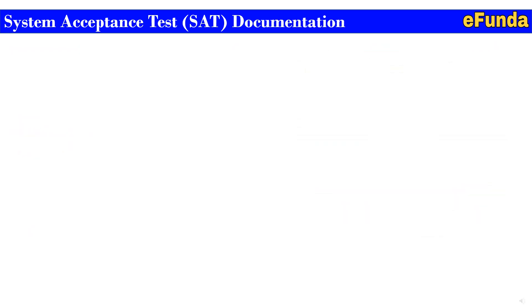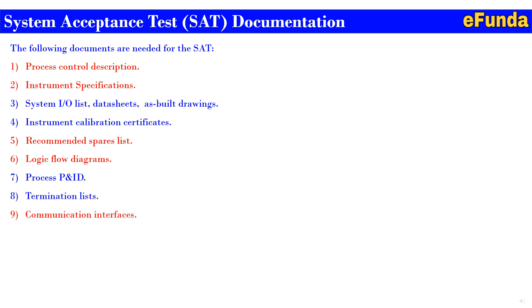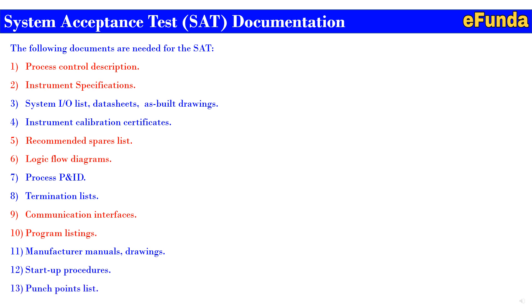Moving on to SAT documentation: there are several methods and types of SATs depending on the client and their installation setup. For the oil and gas or energy sector, typical documents needed include: process control description, instrument specification, system IO list, database and drawings, instrument calibration certificate, recommended spare list, logic flow diagram, process P&ID, termination list, communication interfaces, program listings, manufacturer's manuals or drawings, startup procedure, punch point list, and many others as per site requirements.